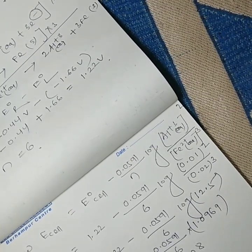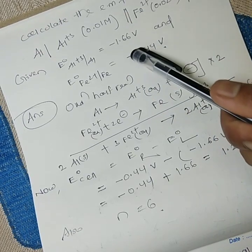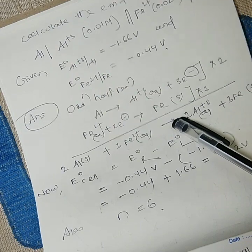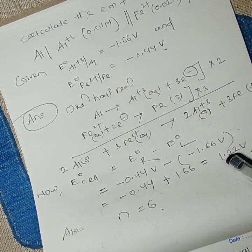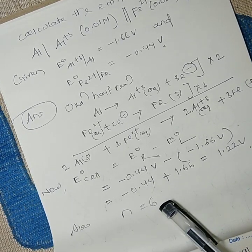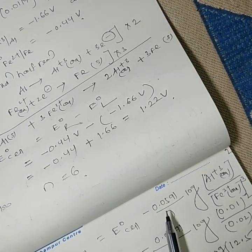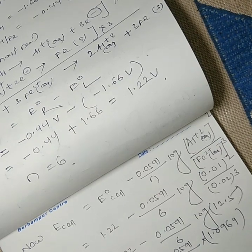This is a 3-mark question. To summarize: the cell presentation and reduction potentials were given. We wrote the oxidation half reaction, reduction half reaction, and net cell reaction. From this, E°cell = 1.22 V, with 6 electrons transferred in the total process. Applying the Nernst equation and substituting, the final answer is E_cell = 1.20 V.